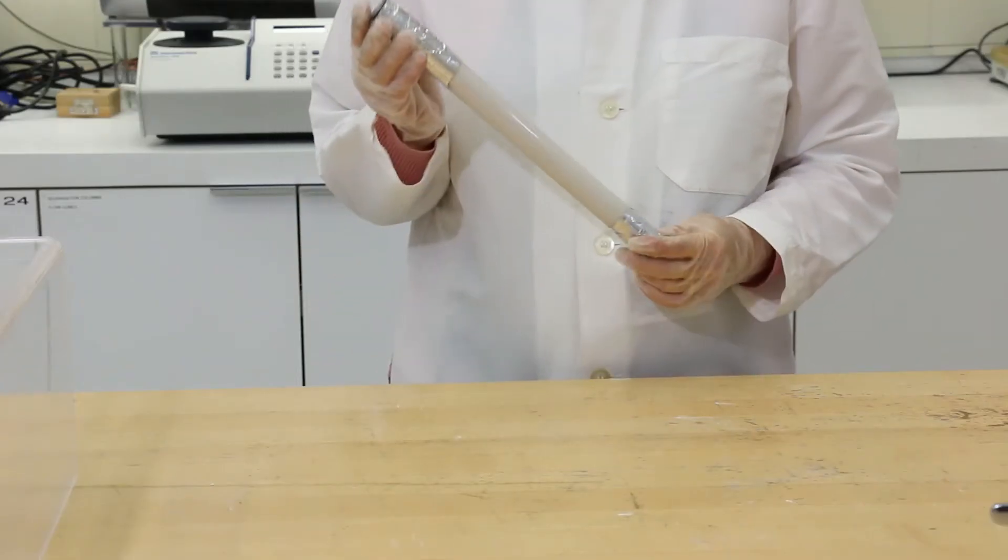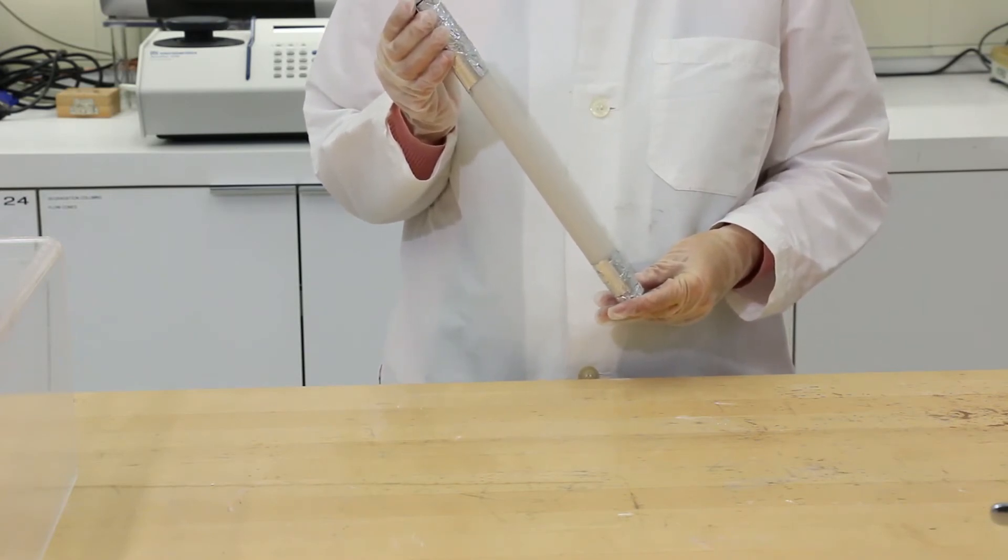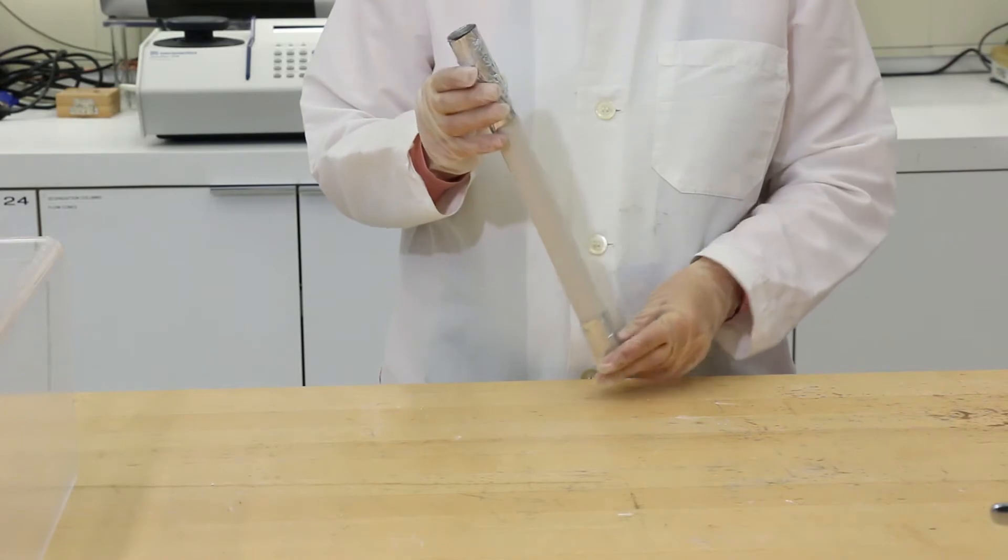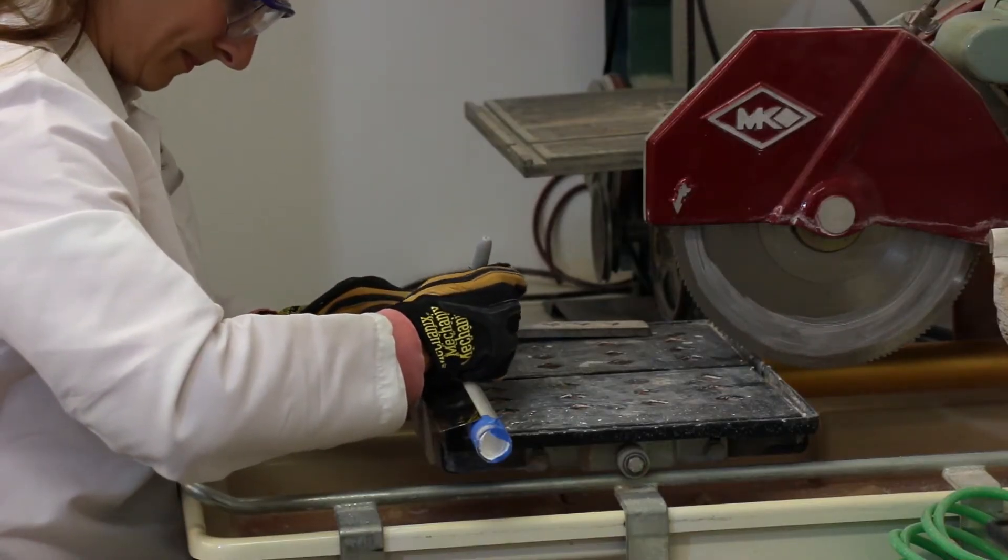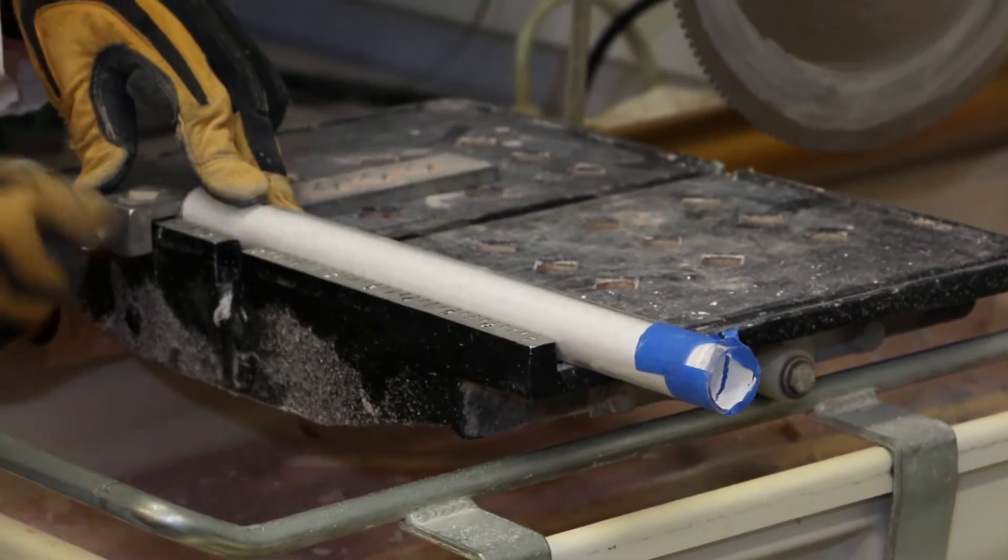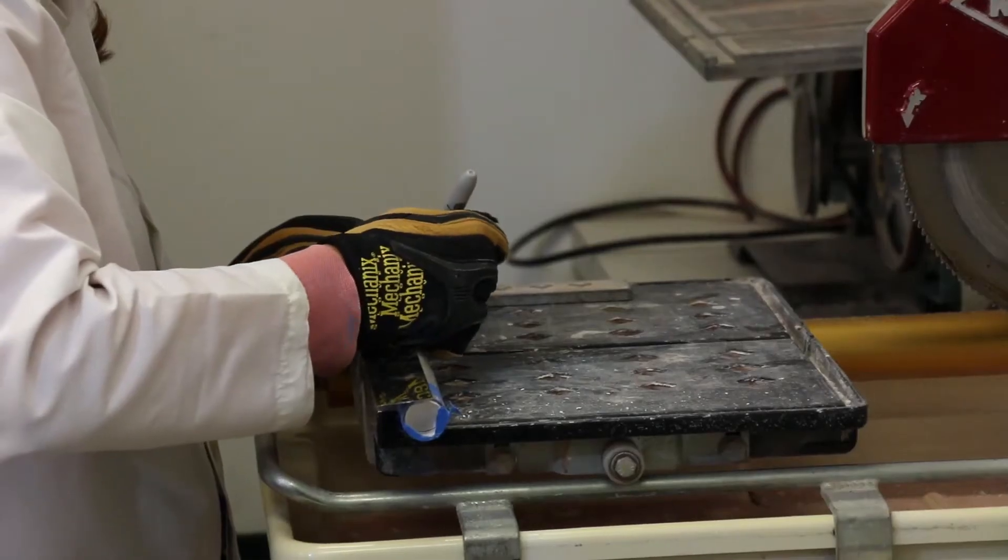Cure the columns under sealed conditions between 21 and 25 degrees centigrade for 4 weeks. First, saw the column perpendicular to its axis to obtain 3 cylindrical specimens with the length of 100 mm each.